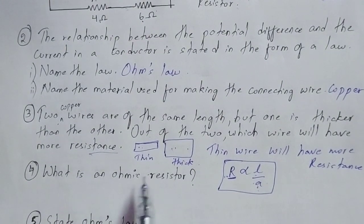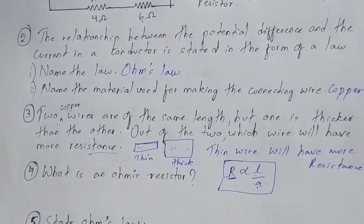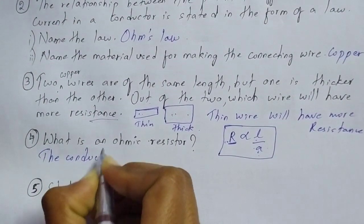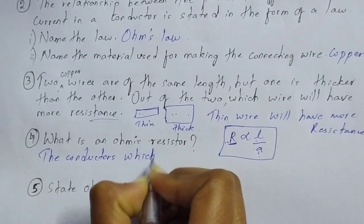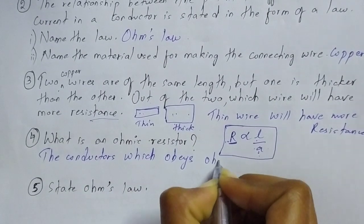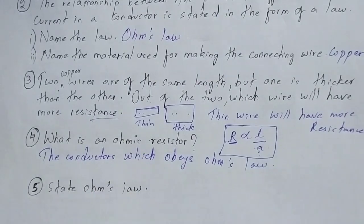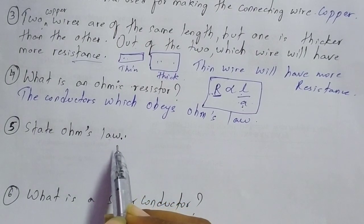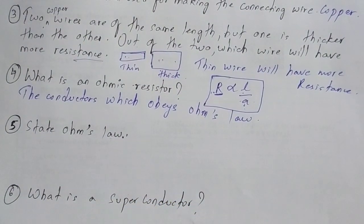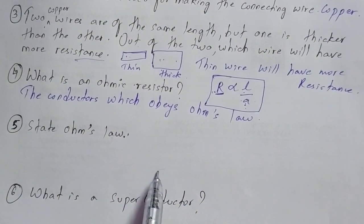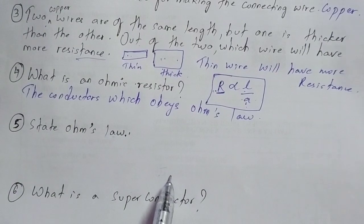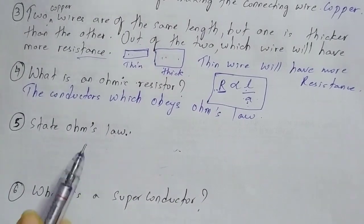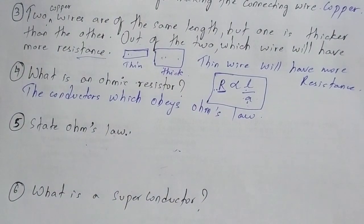Question 4: What is an ohmic resistor? Conductors which obey Ohm's law are called ohmic resistors. Moving on to question 5: state Ohm's law. Ohm's law states that the electric current flowing through a conductor wire is directly proportional to the potential difference, provided the physical conditions and temperature remain constant.